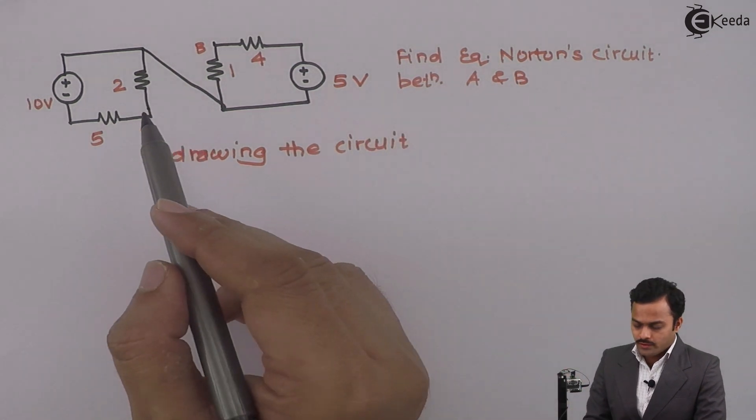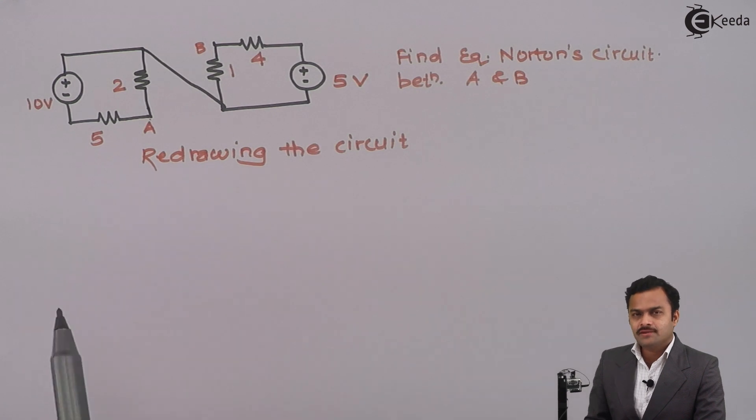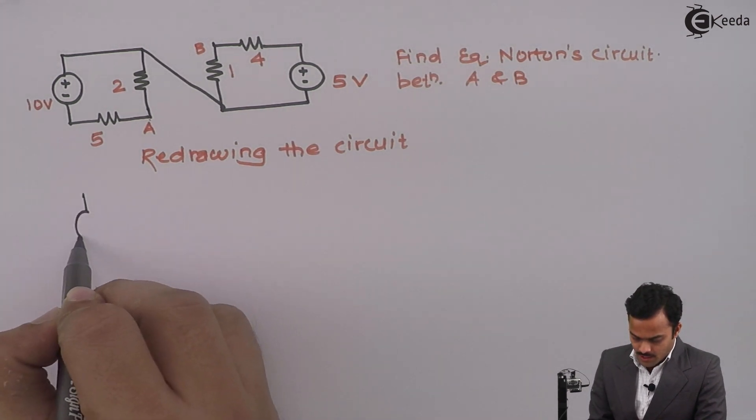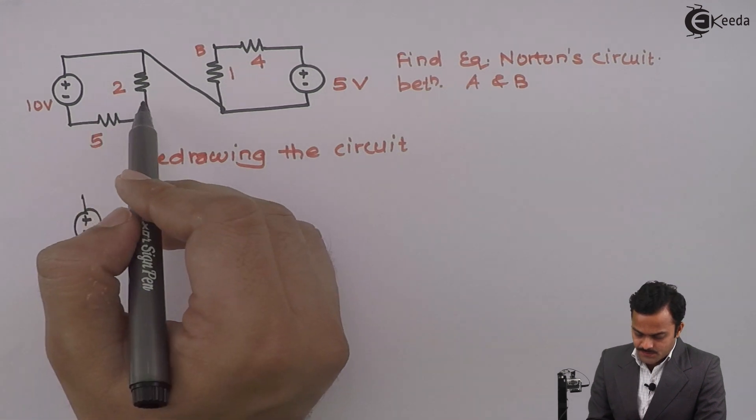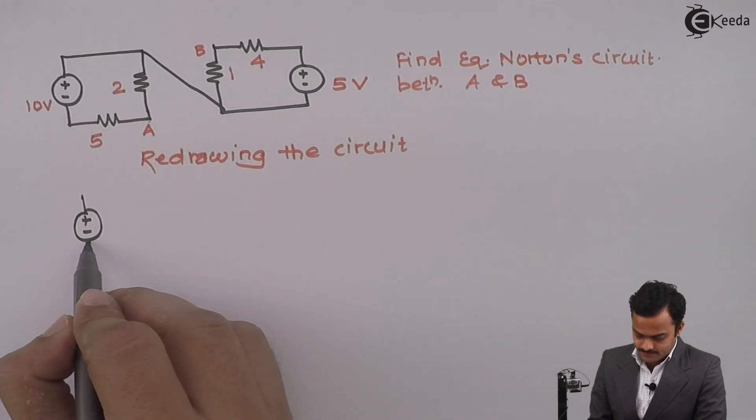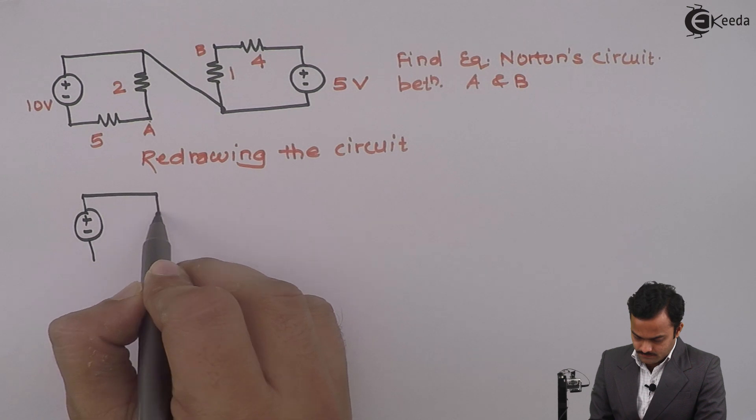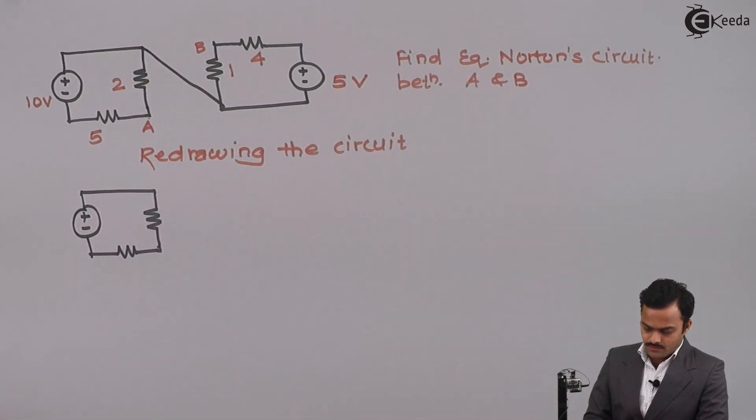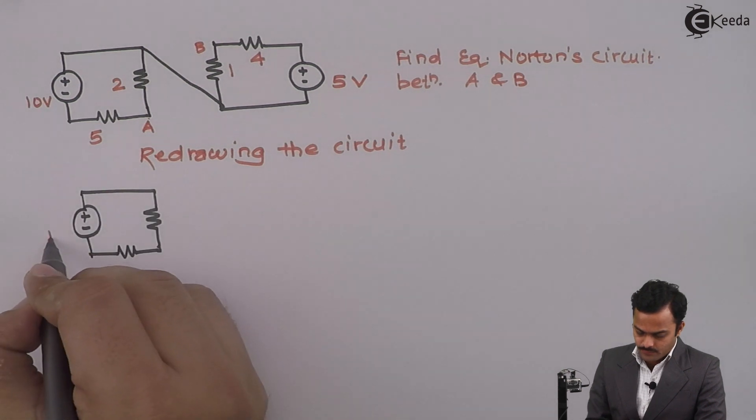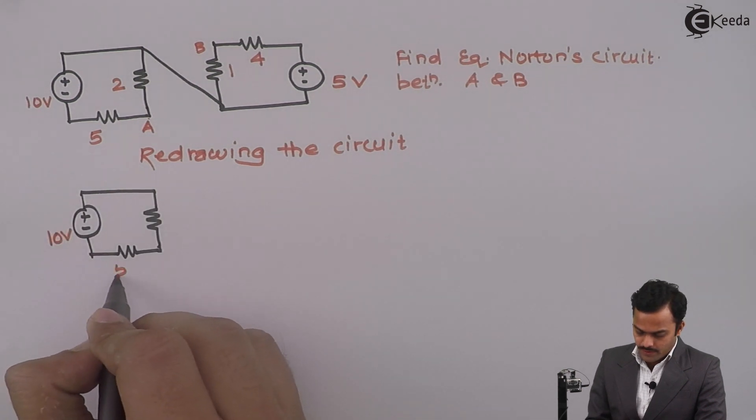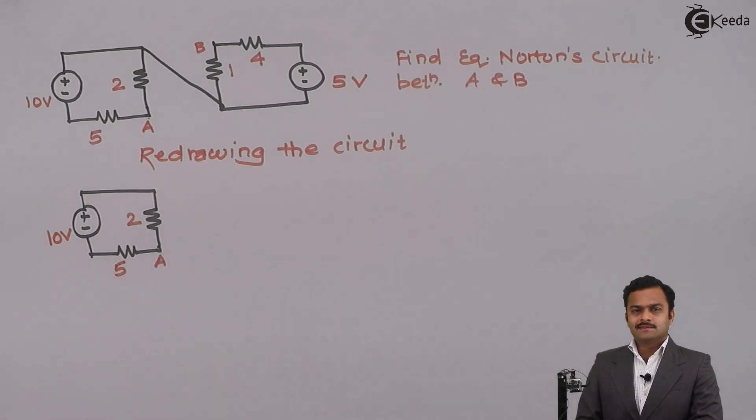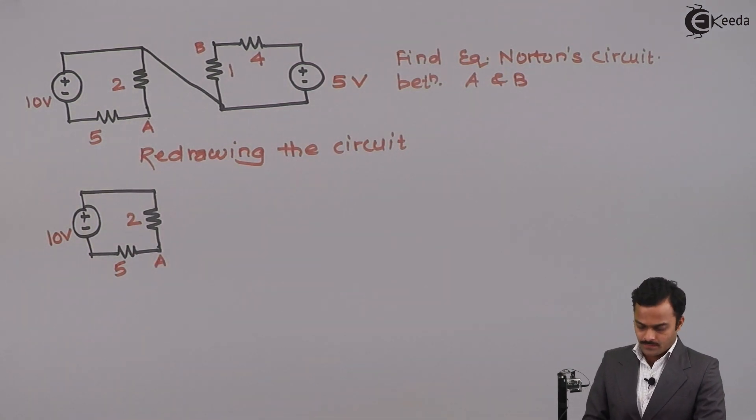See how I am going to redraw the same circuit but with a different orientation. I will keep this part of the circuit as it is. So here it is: 10 volts, 5 ohms, 2 ohms with terminal A.